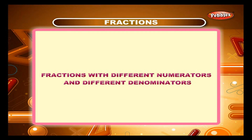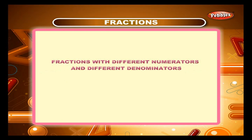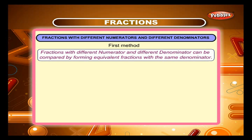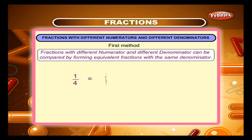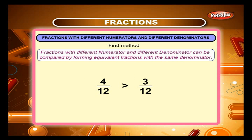Fractions with different numerators and different denominators. First Method: Such fractions can be compared by forming equivalent fractions with the same denominator. For example, 1/3 = 2/6 = 3/9 = 4/12, and 1/4 = 2/8 = 3/12. Therefore, 4/12 is greater than 3/12, so 1/3 is greater than 1/4.